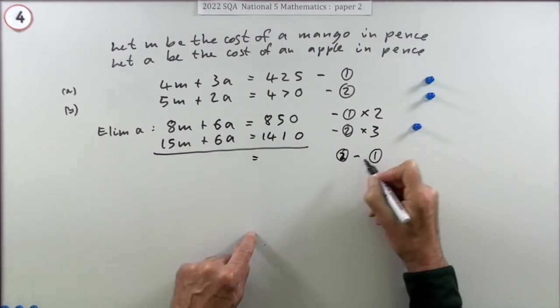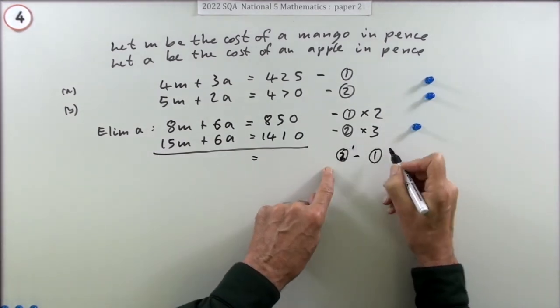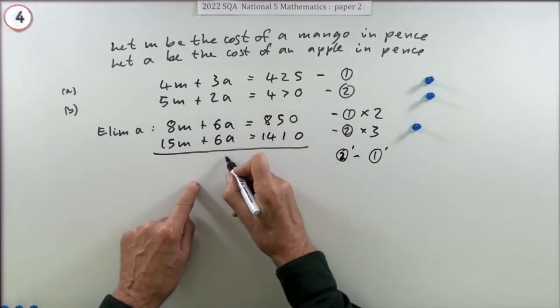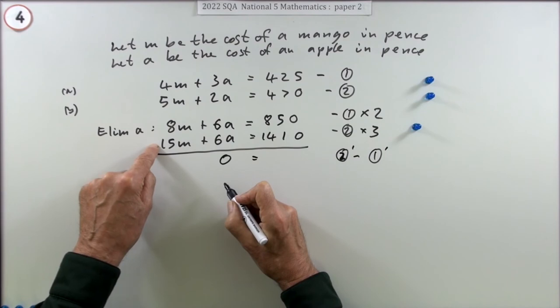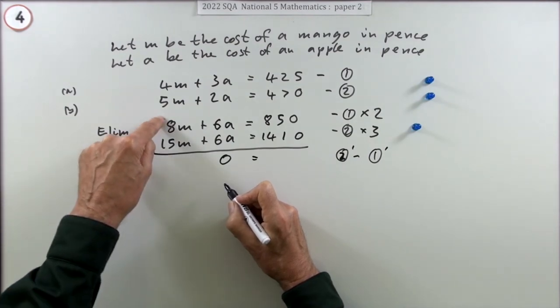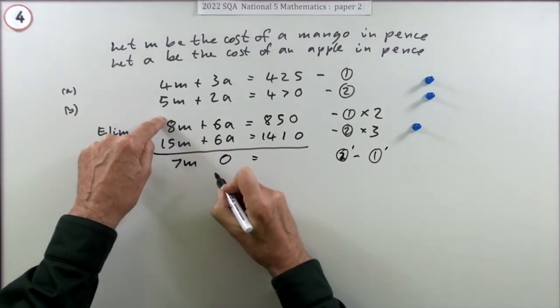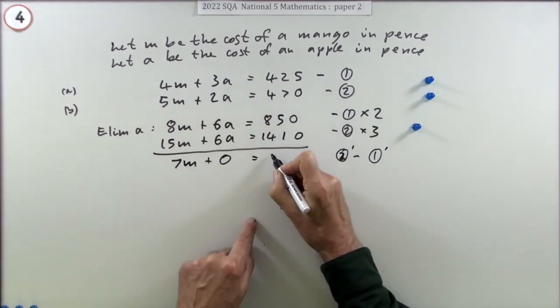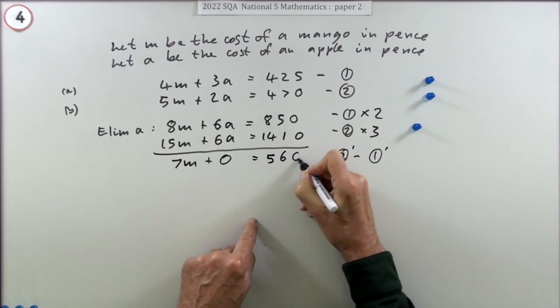If 7m is 560, that means m is 560 divided by 7, so that's nice and neat because that's 80.